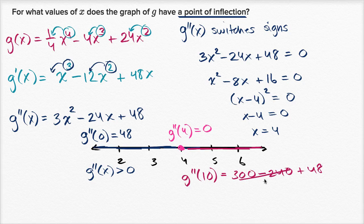So let's see, this is 60. So 300 minus 240 is 60 plus 48, so this is equal to 108. So it's still positive. So on either side of four, g prime prime of x is greater than zero. So even though the second derivative at x equals four is equal to zero, on either side we are concave upwards. On either side the second derivative is positive.